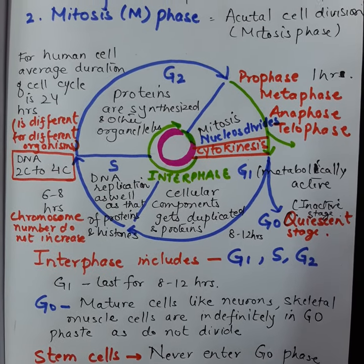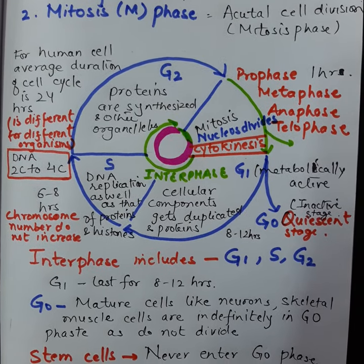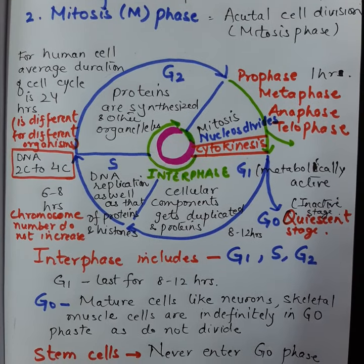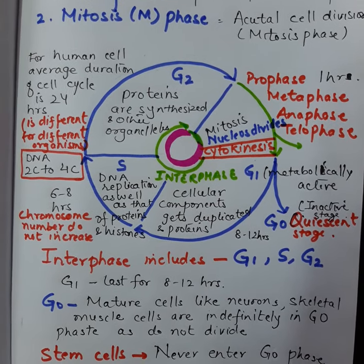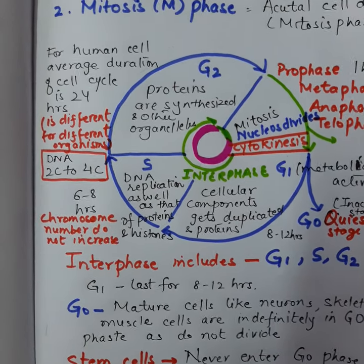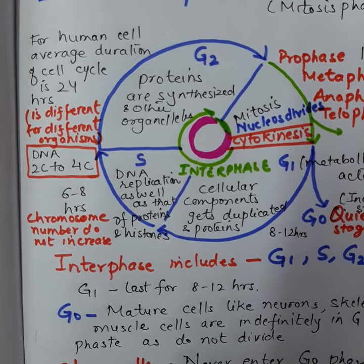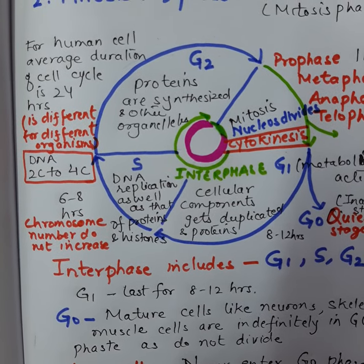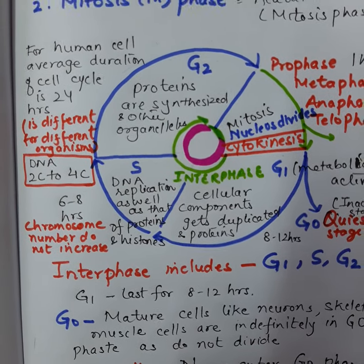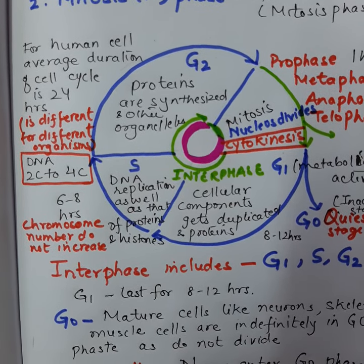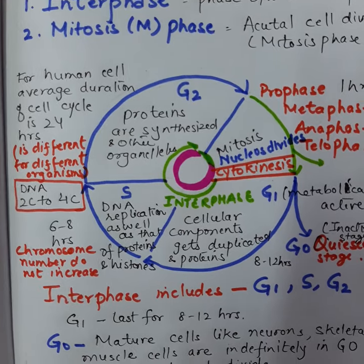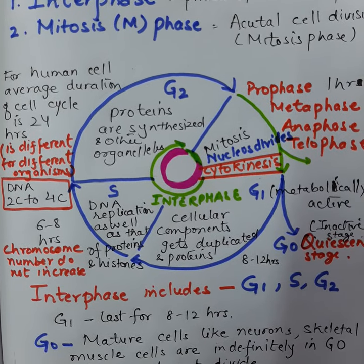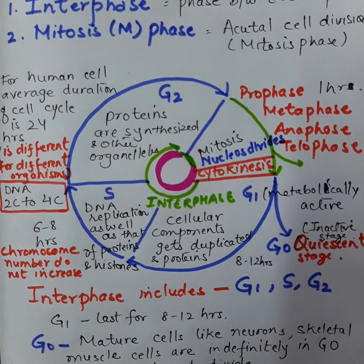Interphase is divided into G1, S, and G2 phases. In the G1 phase, cellular components and proteins get duplicated. In the S phase, the DNA content gets replicated; however, the chromosome number does not increase. In the G2 phase, proteins are synthesized as well as some other organelles.